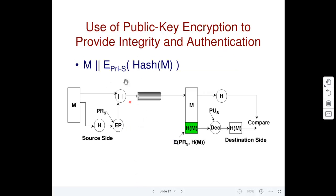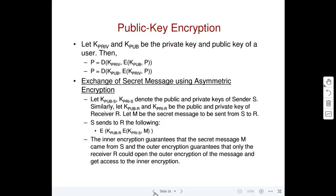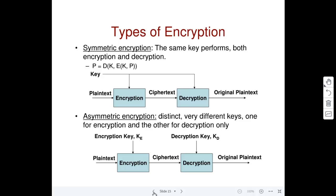Integrity means you want to make sure the message you're sending is not being changed by anyone. Authentication means the receiver should be able to verify it is receiving the message from who it appears to have come from — this is where IP spoofing comes in. You want all three, but sometimes there's a trade-off where you have to compromise on one to accomplish another.